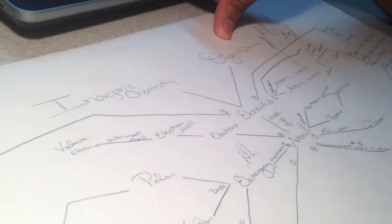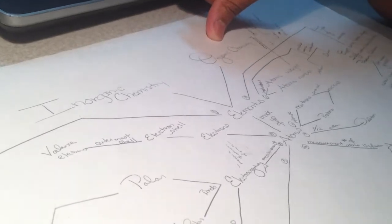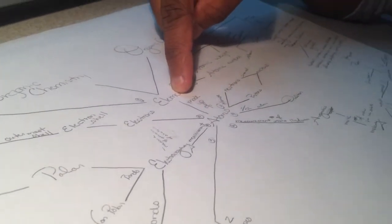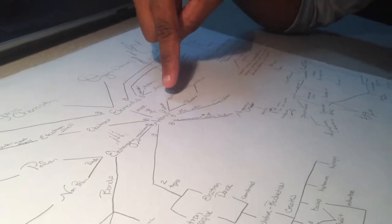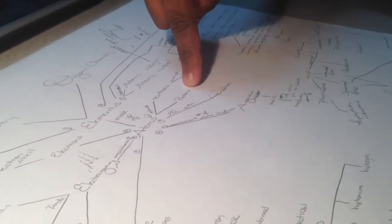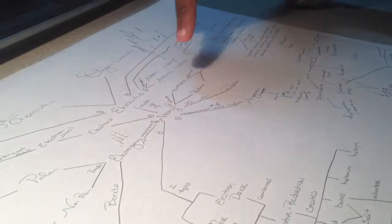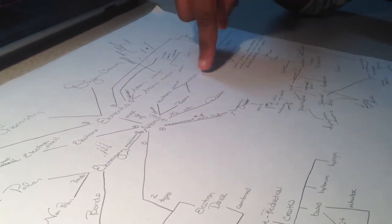We'll begin with inorganic chemistry and organic chemistry. Both types of chemistry study elements, and elements are made up of atoms which house the neutrons and protons and also electrons. The neutrons and protons are contained in the nucleus.